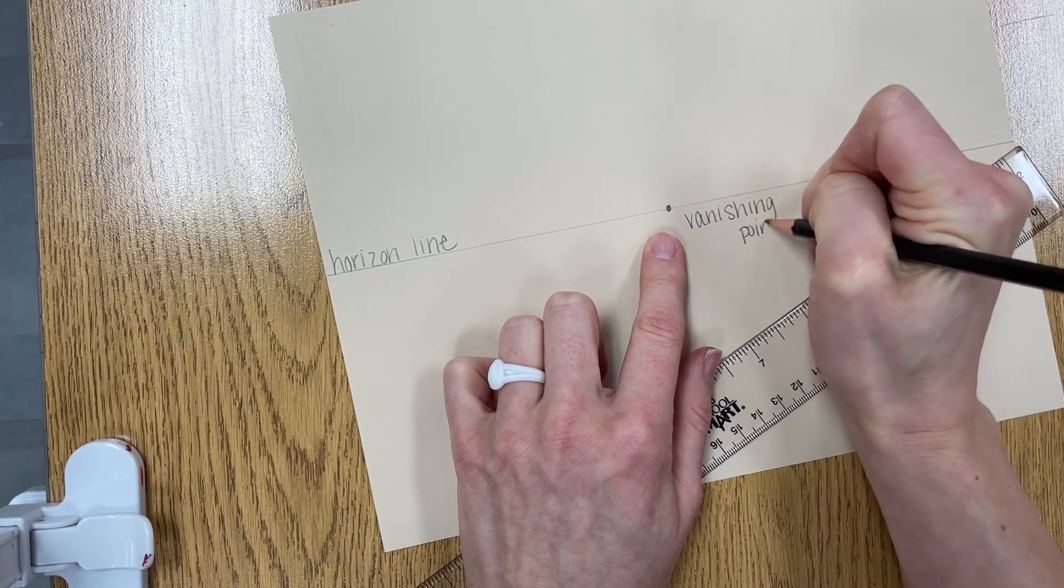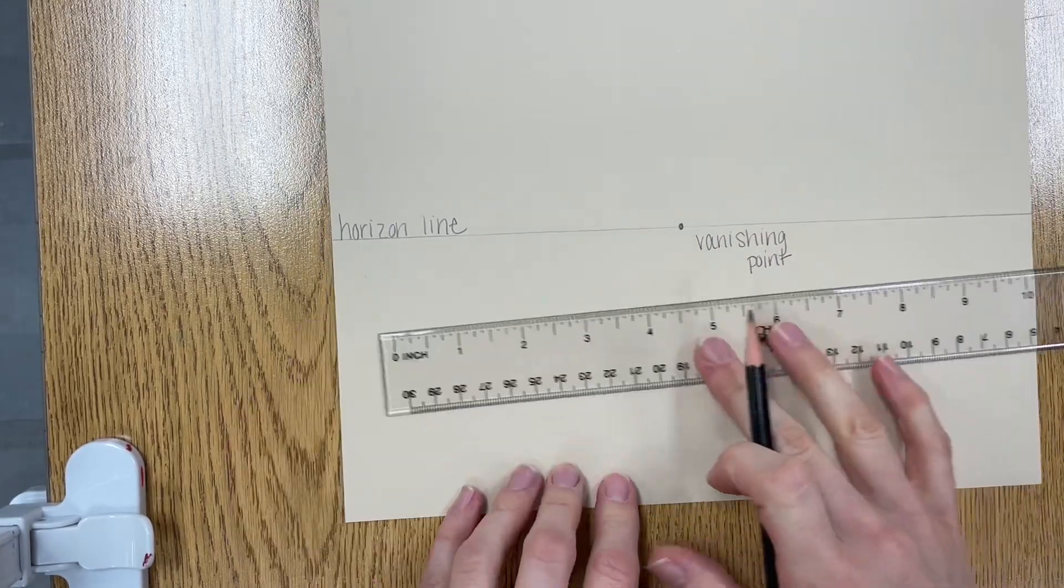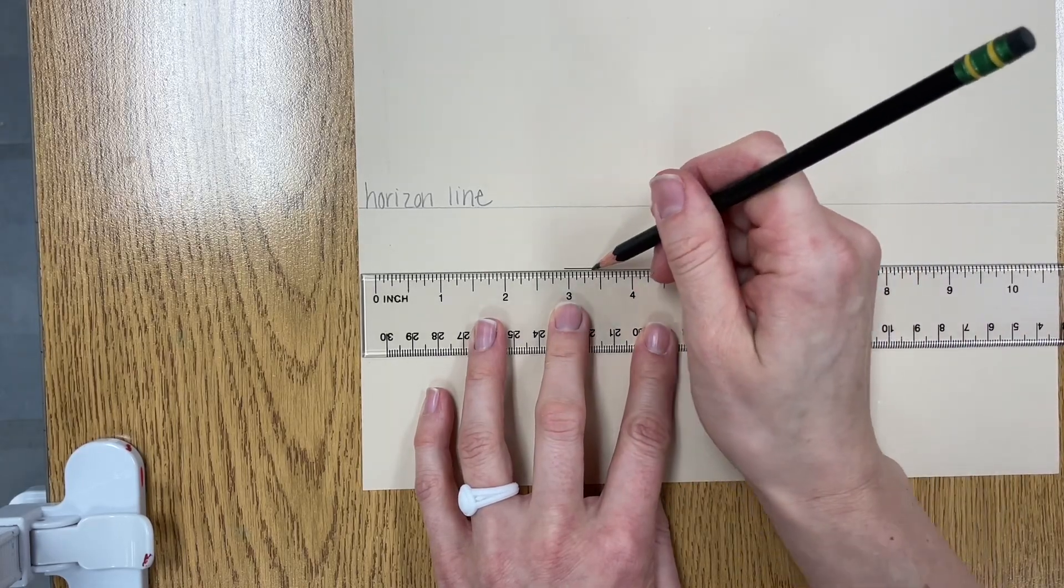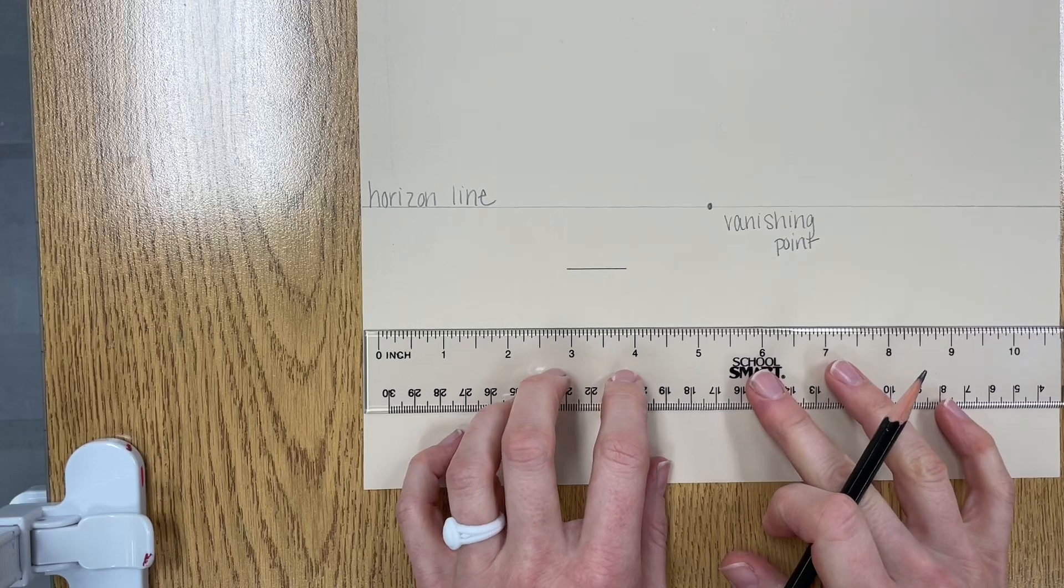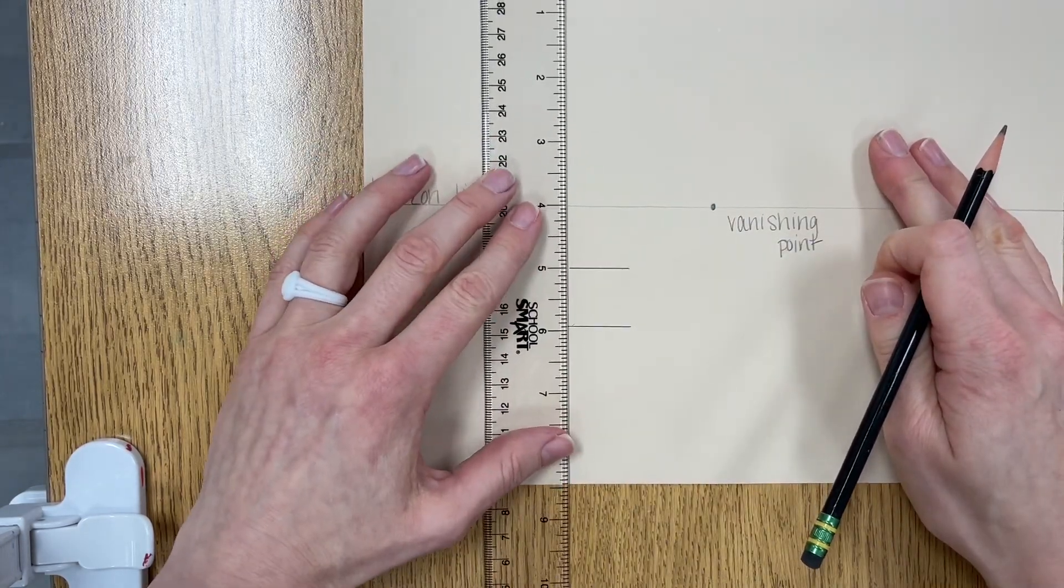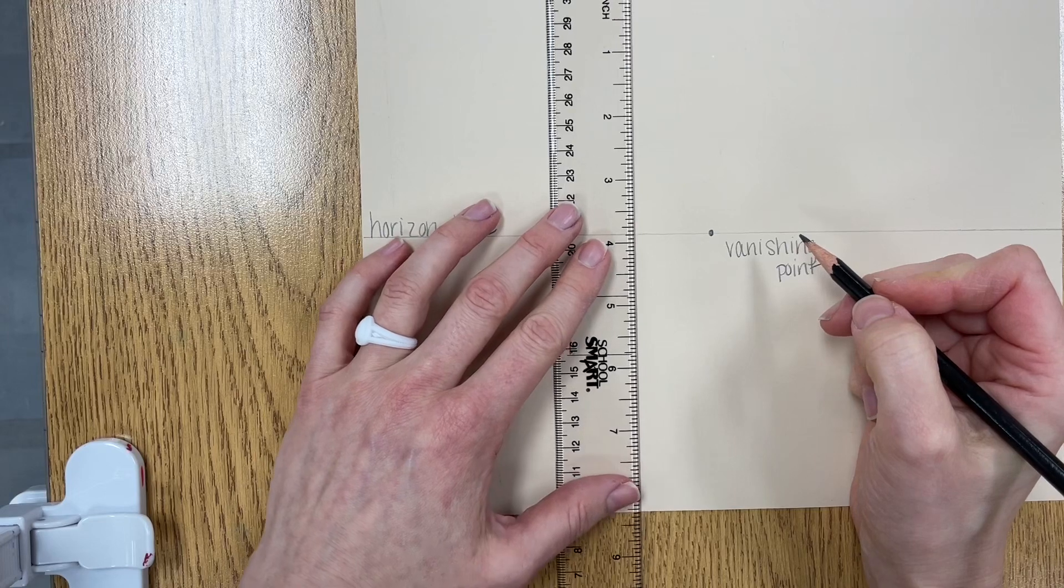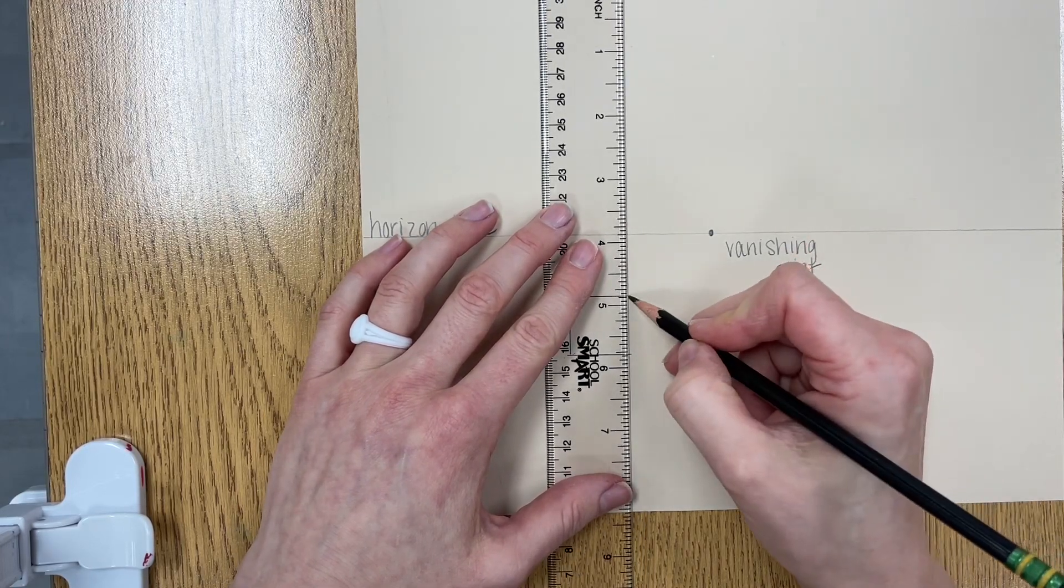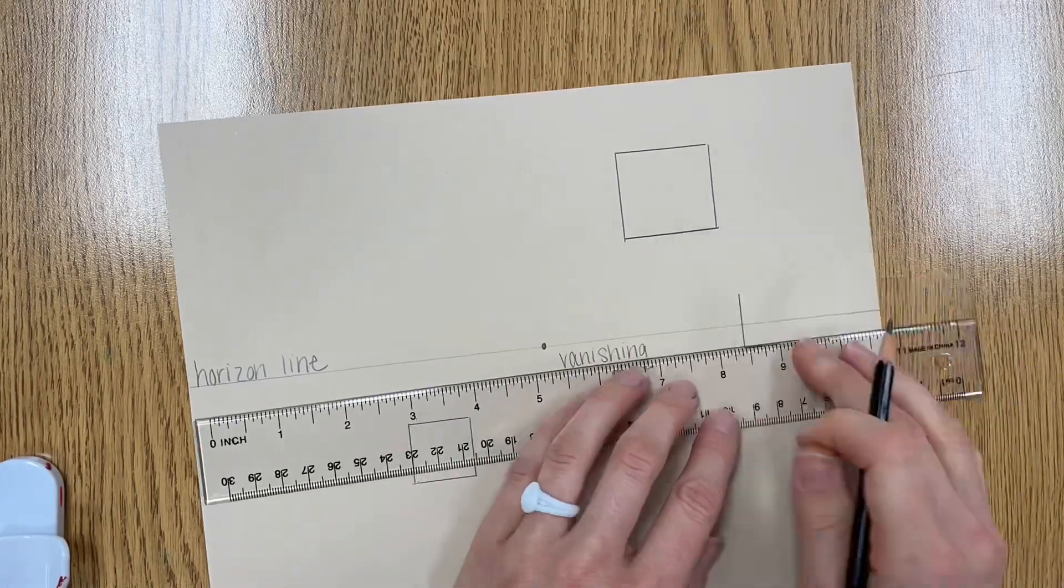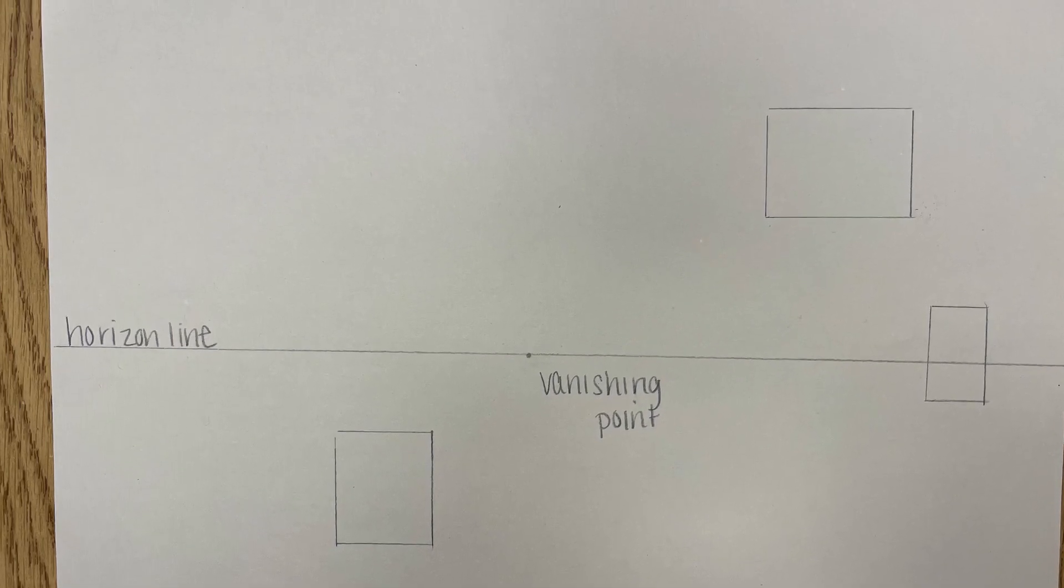Next you're going to add three boxes, they can be squares or rectangles it doesn't matter. You're going to add one that is above and below your horizon line. So here I'm starting with one that is below my horizon line and I'm using the edge of my paper drawing nice straight lines remembering to spread my fingers on my ruler and press downward so the ruler doesn't move around on me. And as I said three boxes below, above, and at the horizon line. Here you can see my three boxes one that is below the horizon line, one that is above, and then one that is on the horizon line.